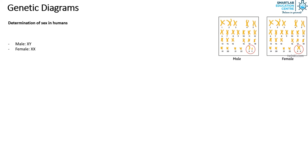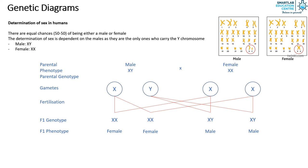It is important to realize that there are equal chances of an individual to be either a male or female, and the determination of sex is dependent on the males as they are the only ones who carry the Y chromosome. We will prove this using the genetic diagram as shown. As can be seen, the probability of being male or female is equal.